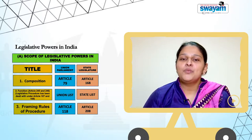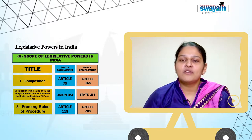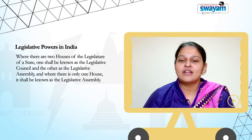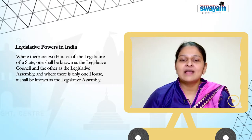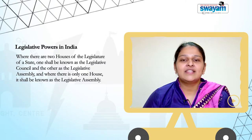In the same manner, Article 168 provides for constitution of legislature in states. For every state, there shall be a legislature which shall consist of the Governor, and in the states of Bihar, Maharashtra, Karnataka and Uttar Pradesh, two houses, and in other states, one house. Where there are two houses of the legislature of a state, one shall be known as the Legislative Council and the other as the Legislative Assembly, and where there is only one house, it shall be known as the Legislative Assembly.